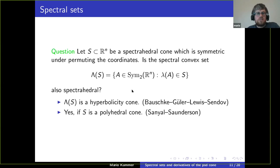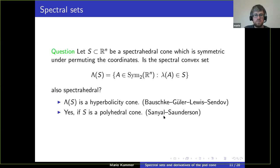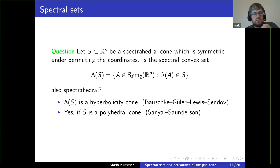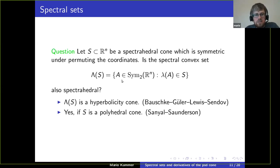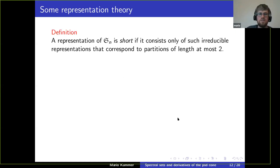The answer is also yes if S is a symmetric polyhedral cone — this was proved by Ramana-Sanjal and James Saunderson in a recent preprint. The goal of this talk is unfortunately not to show this is true in general, but to give a sufficient criterion on S which guarantees that this is a spectrahedral cone. This criterion is a representation-theoretic criterion.